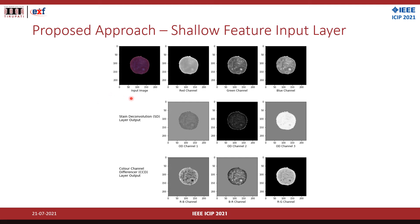The input image has three channels — red, green, and blue. When we pass this input image through the stain deconvolution layer, we get three optical density channels which provide tissue-specific stain absorption quantities as input features. When we pass the input image through color channel difference, we get the difference of color channels as an input layer. The difference of red and blue channels highlights the texture of the cytoplasm, and the difference of blue and red channels highlights the texture of the nucleus more clearly. This combination of different input layers provides more features to our architecture.